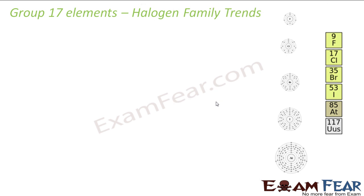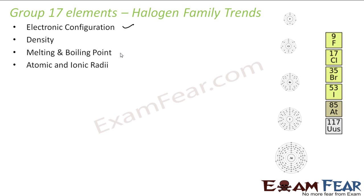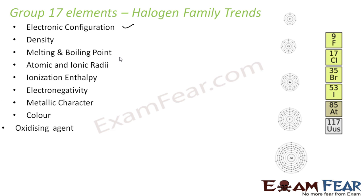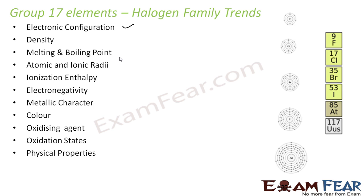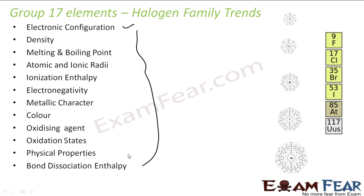Now, having understood the occurrence and overview of Group 17 elements, we will discuss their common physical and chemical properties and regular gradation. The topics will include trends in electronic configuration, density, melting and boiling point, atomic and ionic radius, ionization enthalpy, electronegativity, metallic character, color, oxidizing ability, oxidation states, and bond dissociation enthalpy.